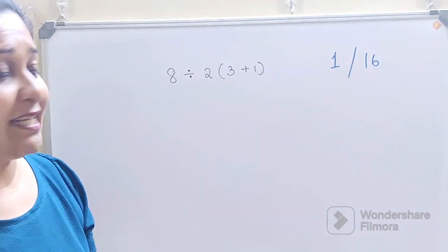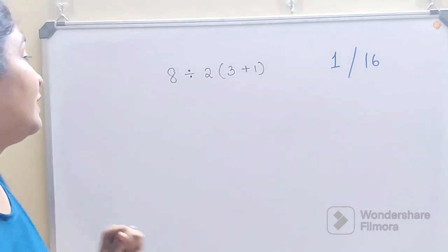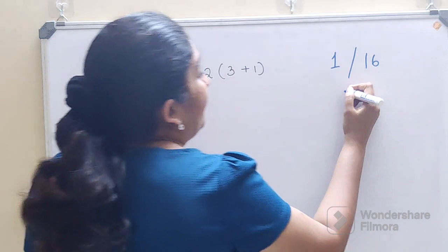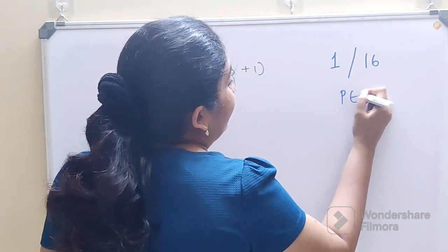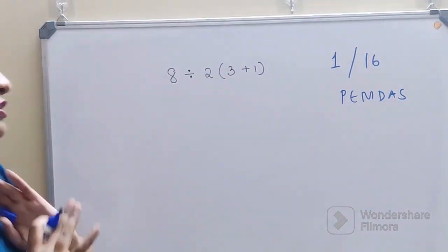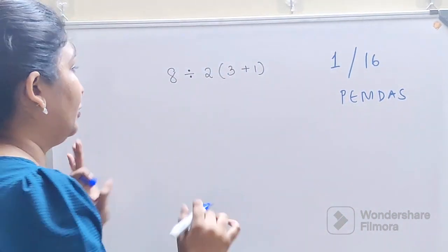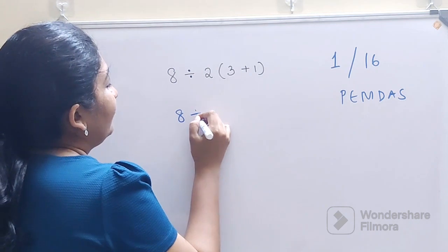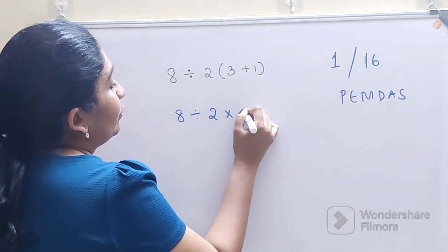Now let's understand what you should be doing in these kind of scenarios. Please understand, according to PEMDAS you need to first finish the parenthesis. So first we will do that. So 8 divided by 2 into 4.